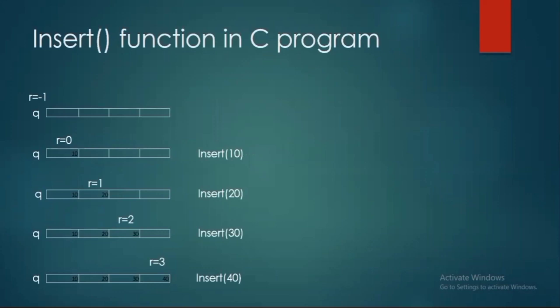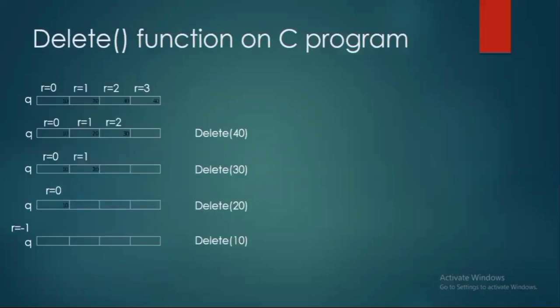In a queue, you make use of the insert function to insert an element. For example: insert 10, insert 20, insert 30, insert 40. Every time I insert a value, the variable r is used to keep the count of the queue - the number of elements present in the queue. If r is one there are two elements, if r is two there are three elements, and so on depending on the size of the queue.